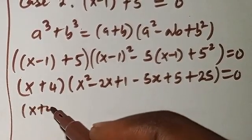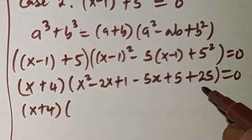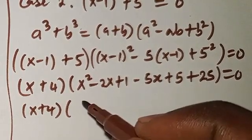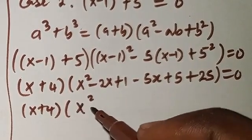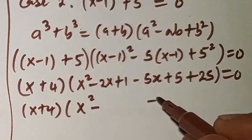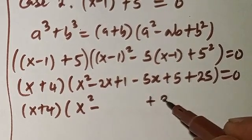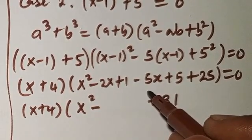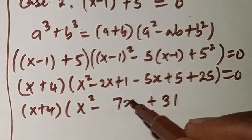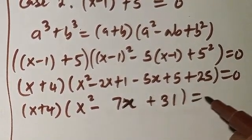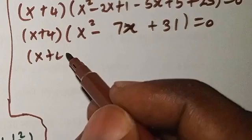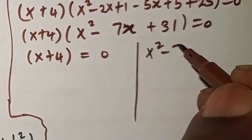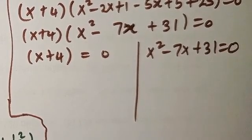So from here, opening the bracket, we're going to have x minus 1 plus 5, which is x plus 4. Then here we have x squared minus 2x plus 1. Opening the bracket: minus 5x plus 5, plus 25 equals 0. So we have x plus 4 times x squared. Then minus 2x minus 5x gives minus 7x. And 25 plus 5 plus 1 gives plus 31, equals 0.